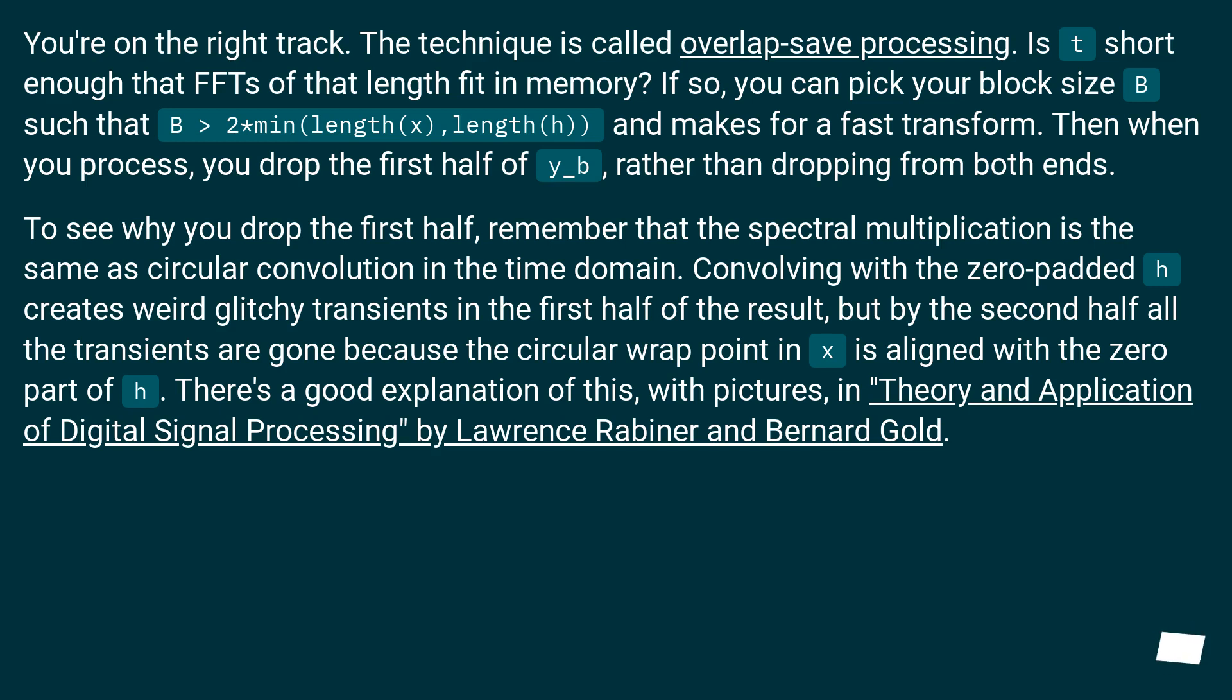To see why you drop the first half, remember that the spectral multiplication is the same as circular convolution in the time domain. Convolving with the zero-padded h creates weird glitchy transients in the first half of the result, but by the second half all the transients are gone because the circular wrap point in x is aligned with the zero part of h.